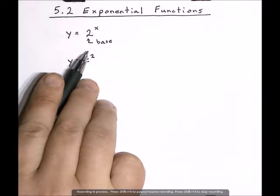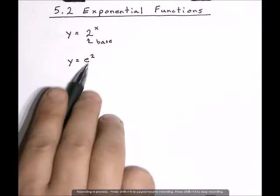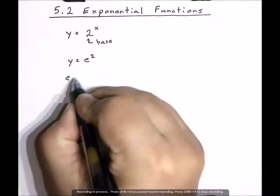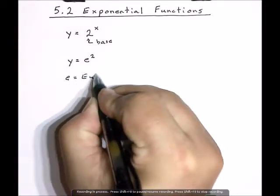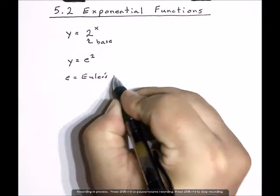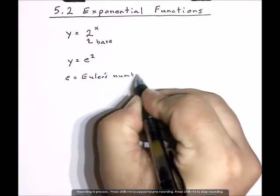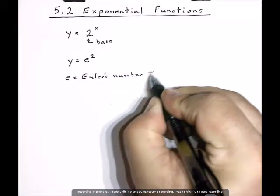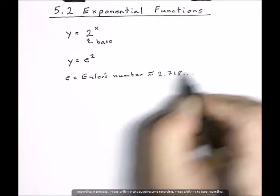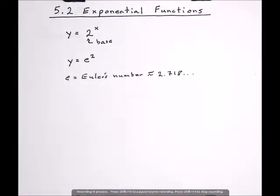In this section you're also going to be introduced to this little e, which is called Euler's number, which is about 2.718 and so on. It's one of those numbers like pi that goes on forever.